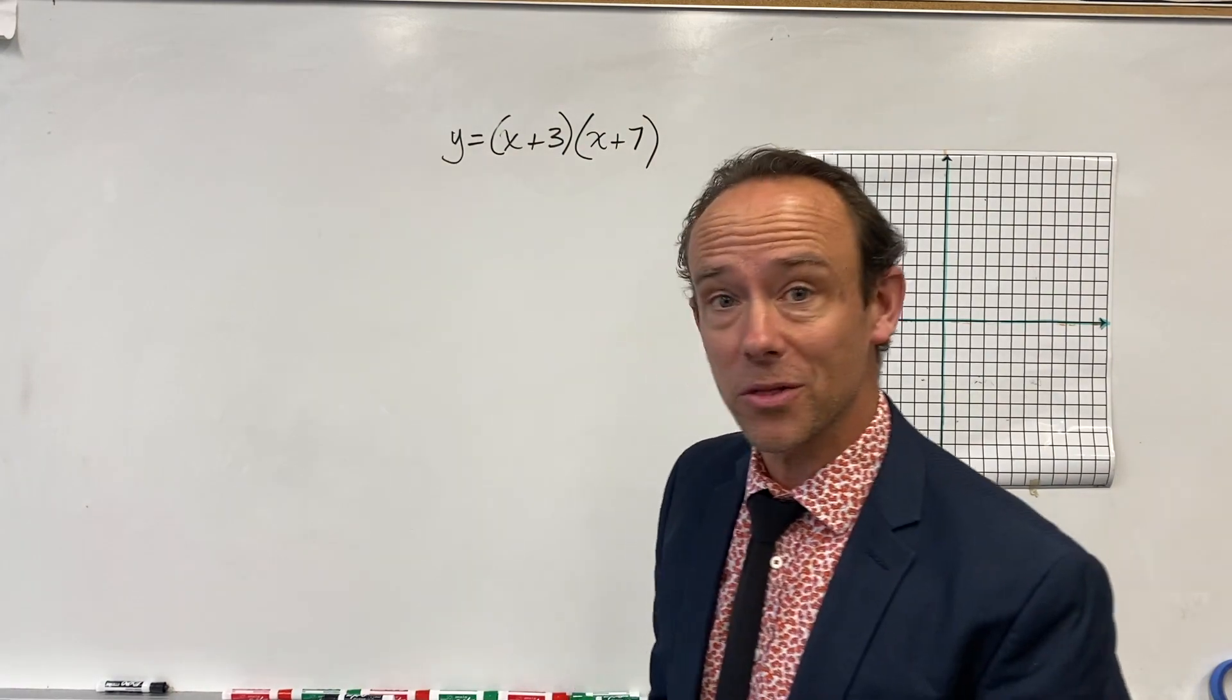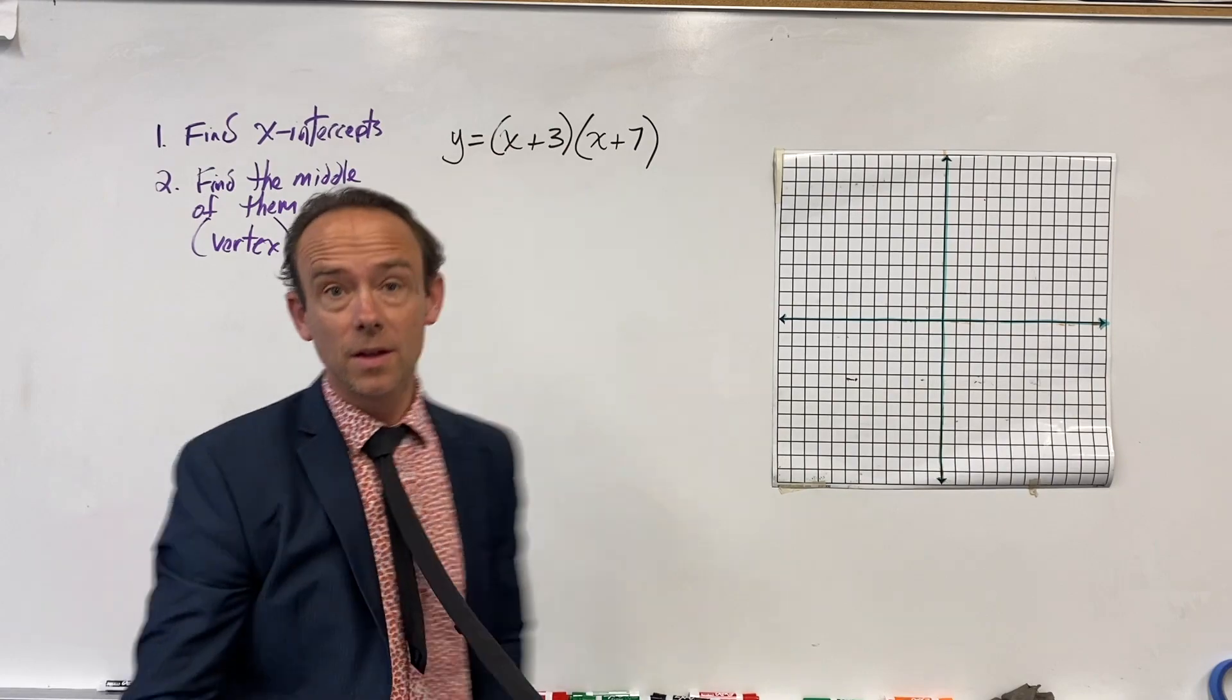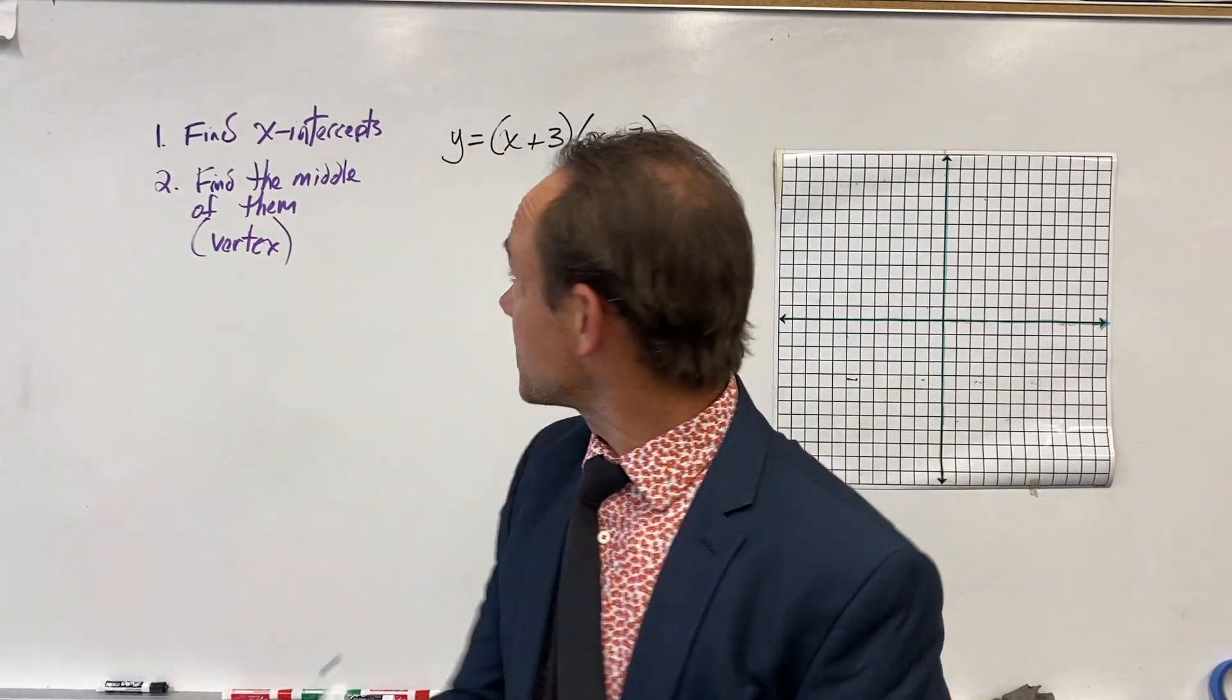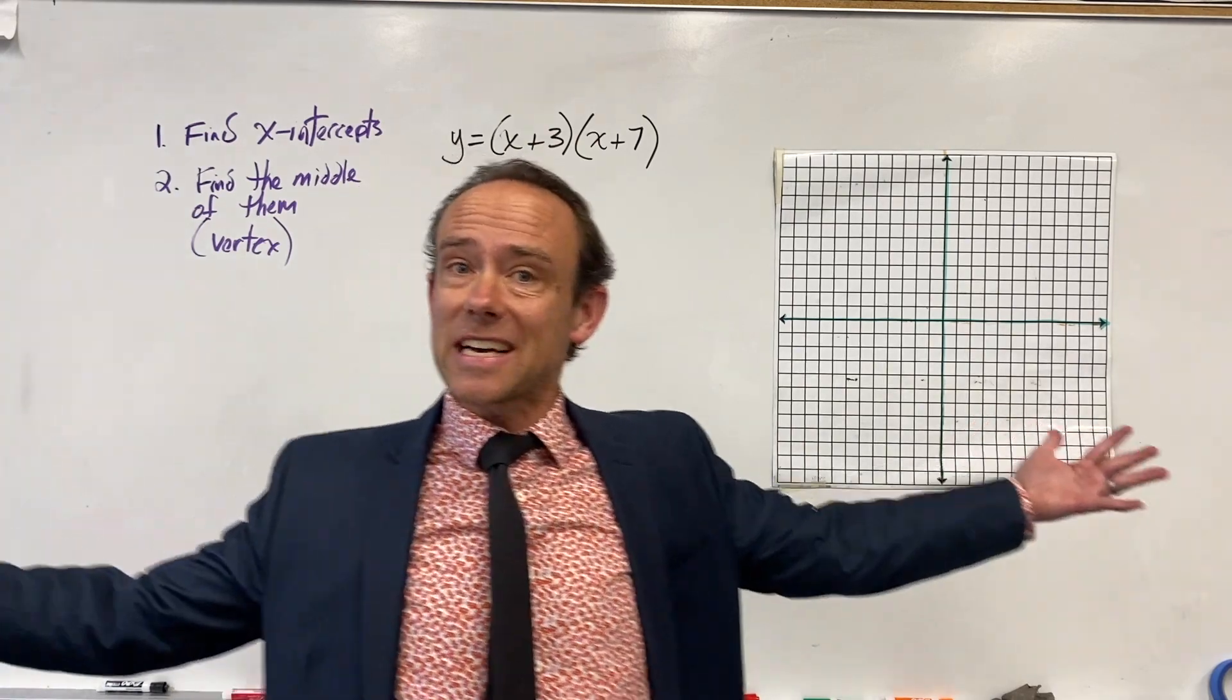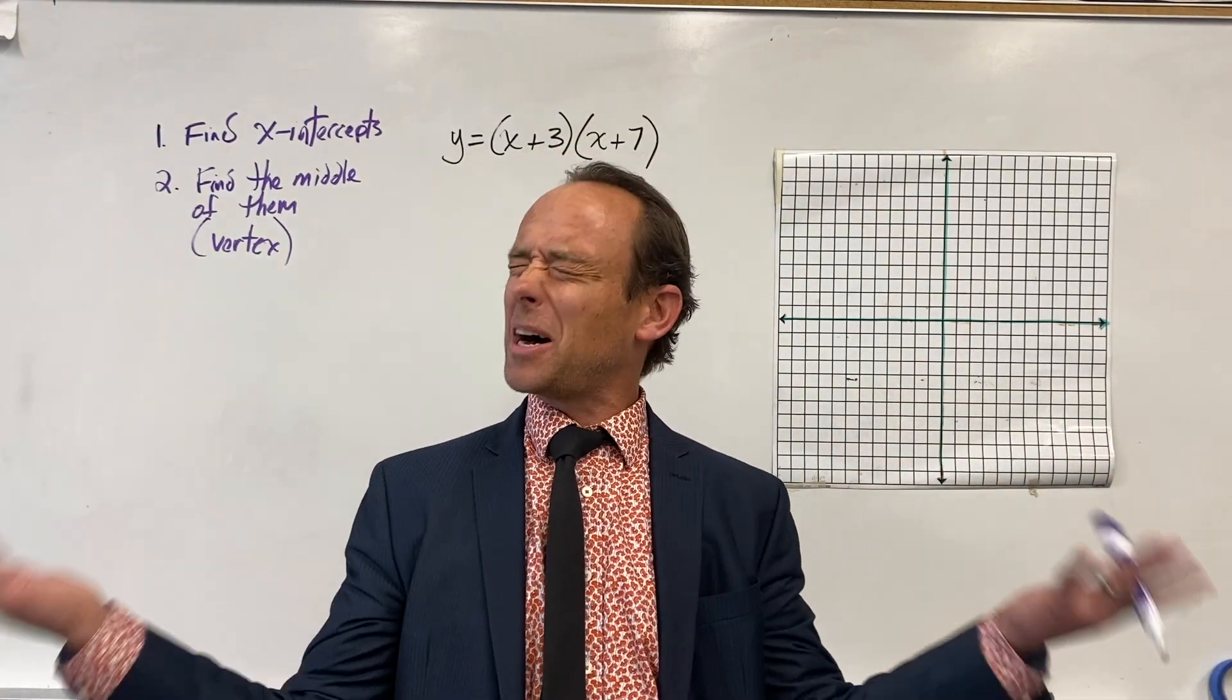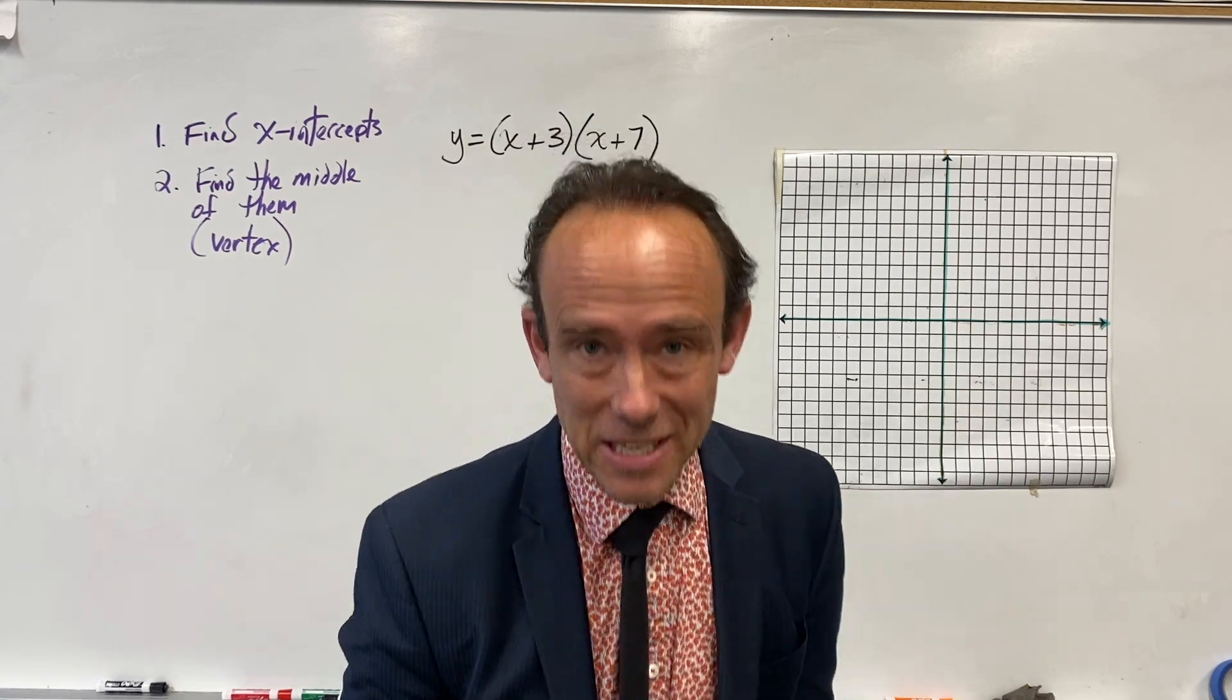In this case, vertex is not the characteristic that is easiest to get from intercept form. From intercept form we get x-intercepts. So here's our game plan: find the x-intercepts, and we know the vertex has to be in the middle because of the gorgeous, phenomenal, flawless beauty of the parabola.